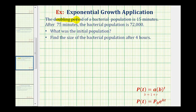The doubling period for a bacterial population is 15 minutes. After 75 minutes, the population is 72,000. We're asked to determine the initial population and the population after four hours.